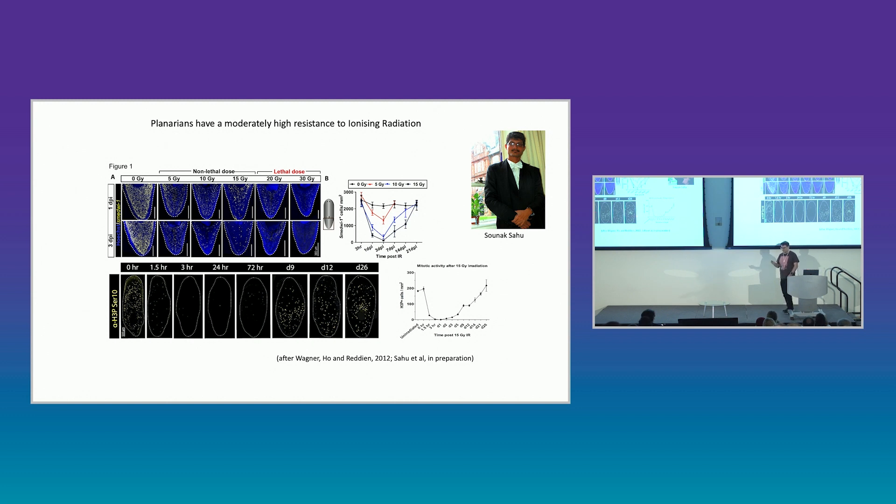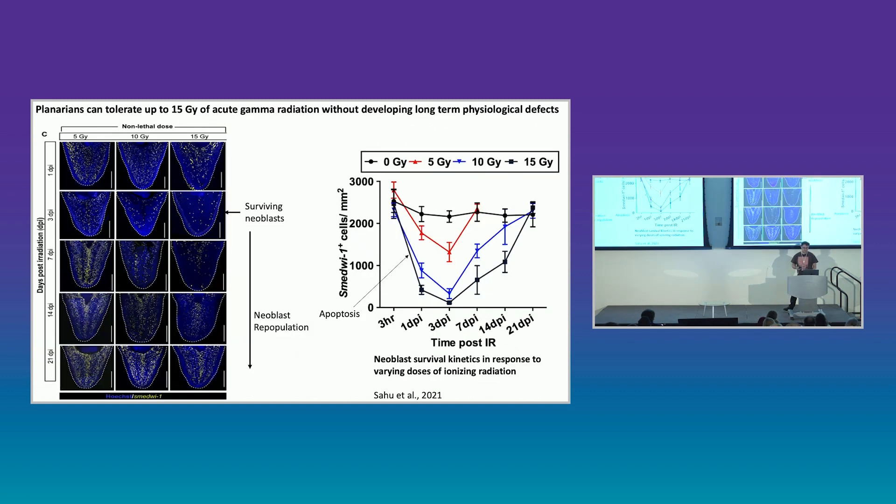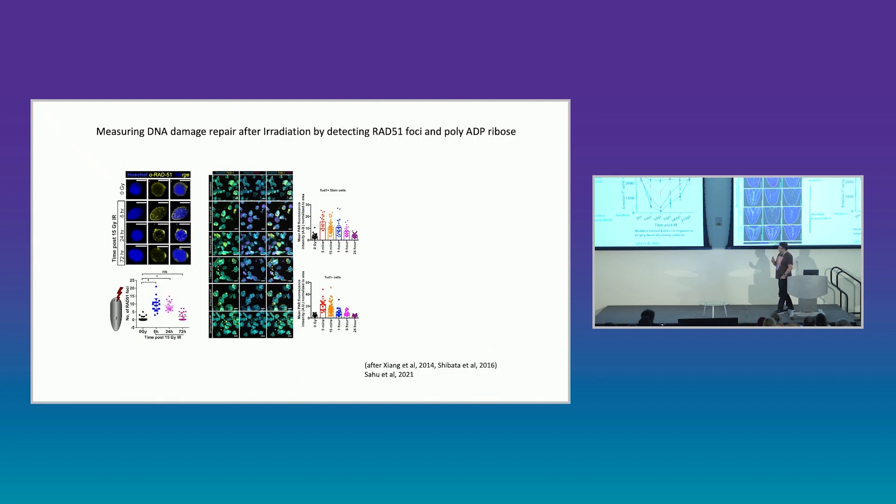So this is a good level of resistance and surprising in a population of stem cells that are constantly cycling. And this is just the same, just to show that it takes about three days before these cells are competent to reenter the cell cycle after exposure. So they start to repopulate about 72 hours. So during that time, they're doing something that allows them to survive, maintain potency, and reenter the cell cycle.